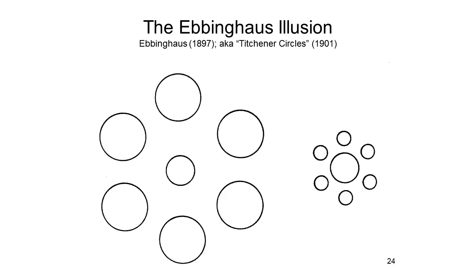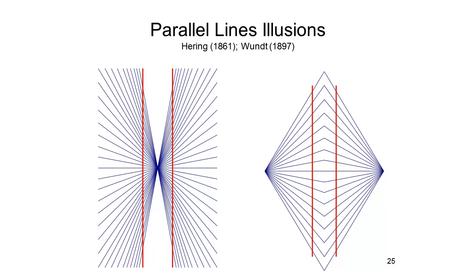Here's another classic illusion, the Ponzo illusion, in which there are converging lines — sometimes known as the railroad tracks illusion. The upper horizontal line looks longer than the lower horizontal line, even though the two lines are of exactly identical length. Here's another classic illusion, the Ebbinghaus illusion, popularized by Titchener and sometimes known as the Titchener circles. The center circle on the left looks smaller than the center circle on the right, even though they're exactly the same diameter. Literally hundreds of illusions have been devised by graphic artists and psychologists over the years.